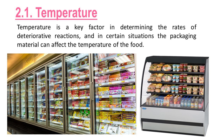Temperature is a key factor in determining the rates of deteriorative reactions, and in certain situations the packaging material can affect the temperature of the food. For packages stored in refrigerated display cabinets, most of the cooling takes place by conduction and convection. Simultaneously, there is a heat input by radiation from the fluorescent lamps used for lighting. Under these conditions, aluminum foil offers real advantages because of its high reflectivity and high conductivity.